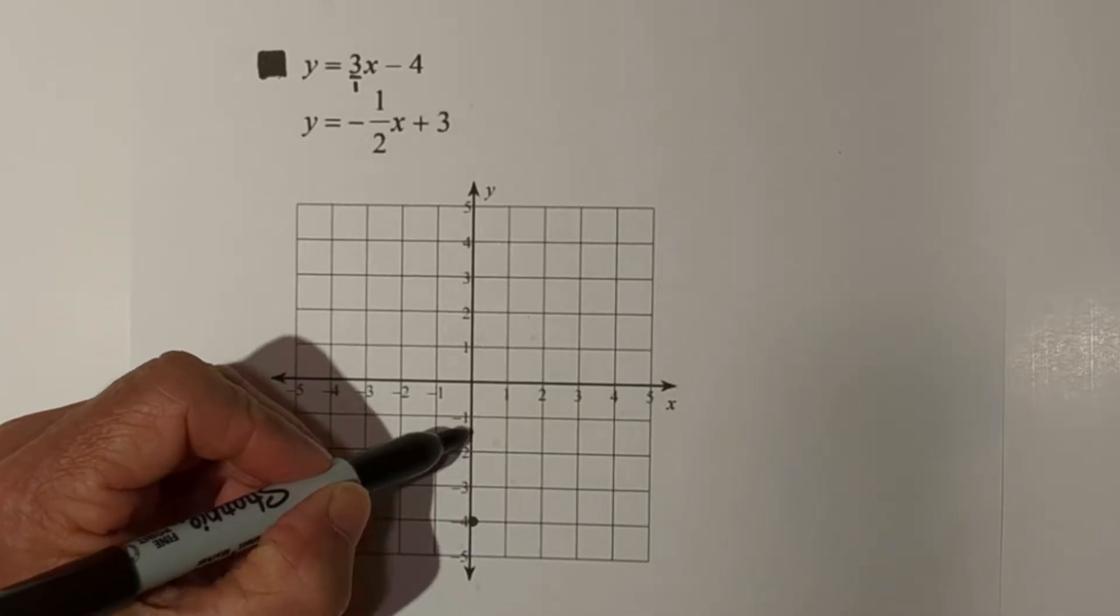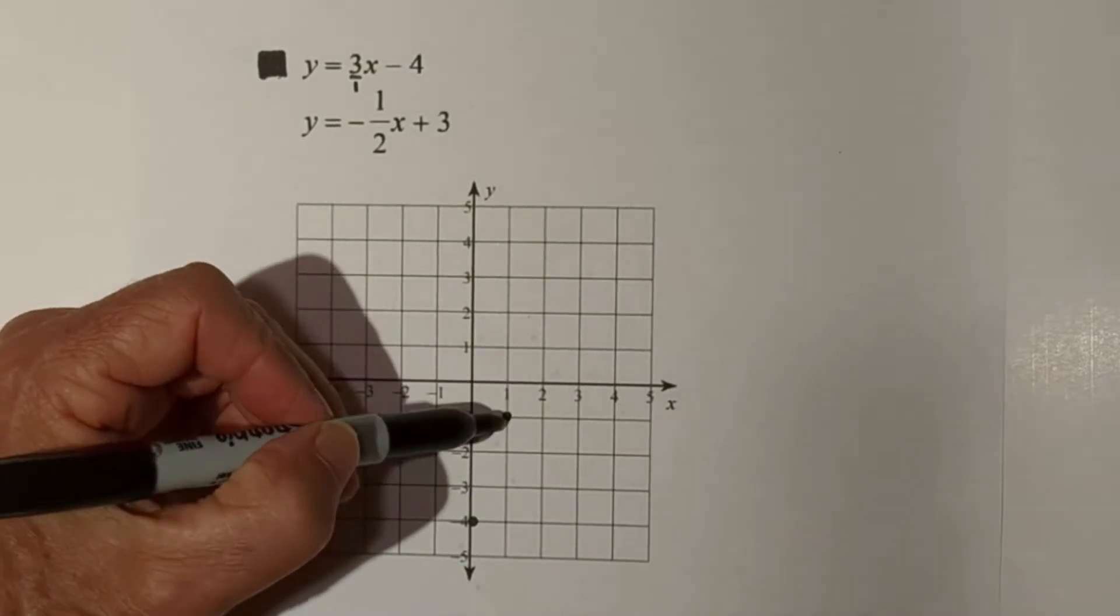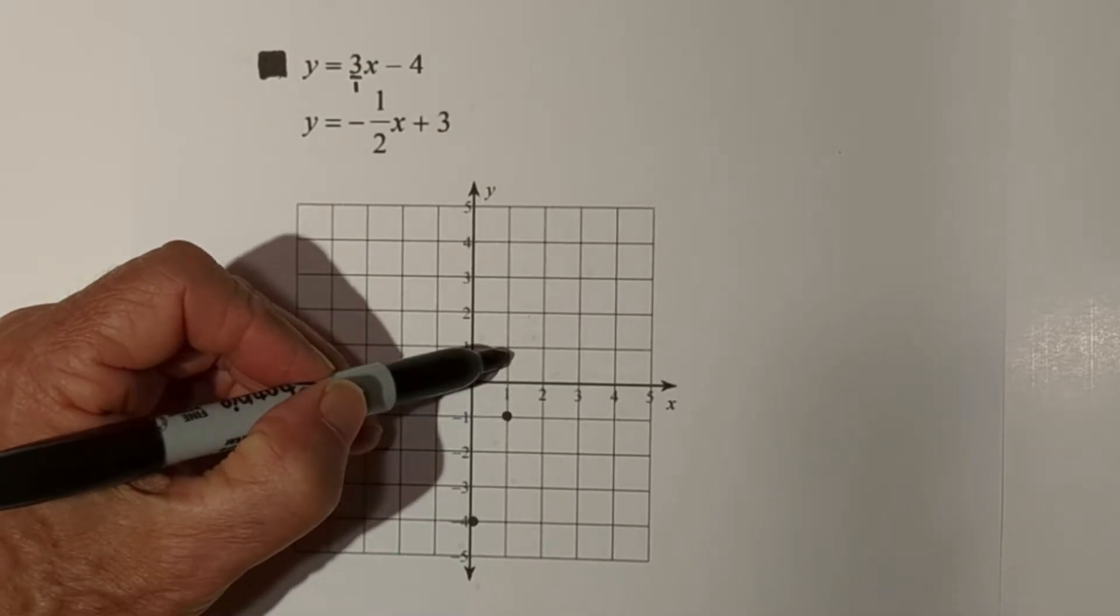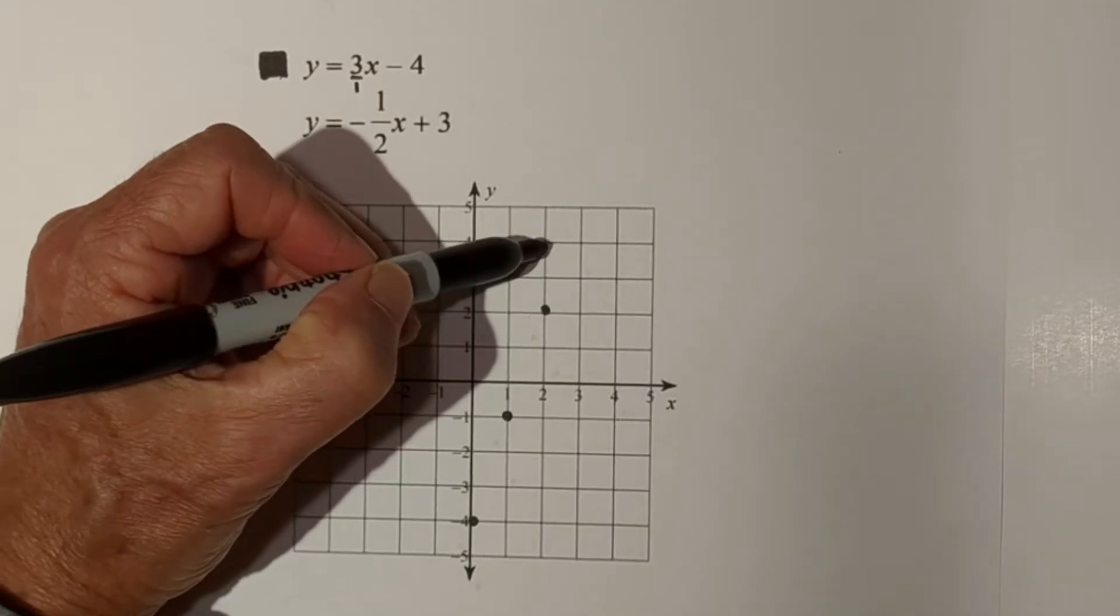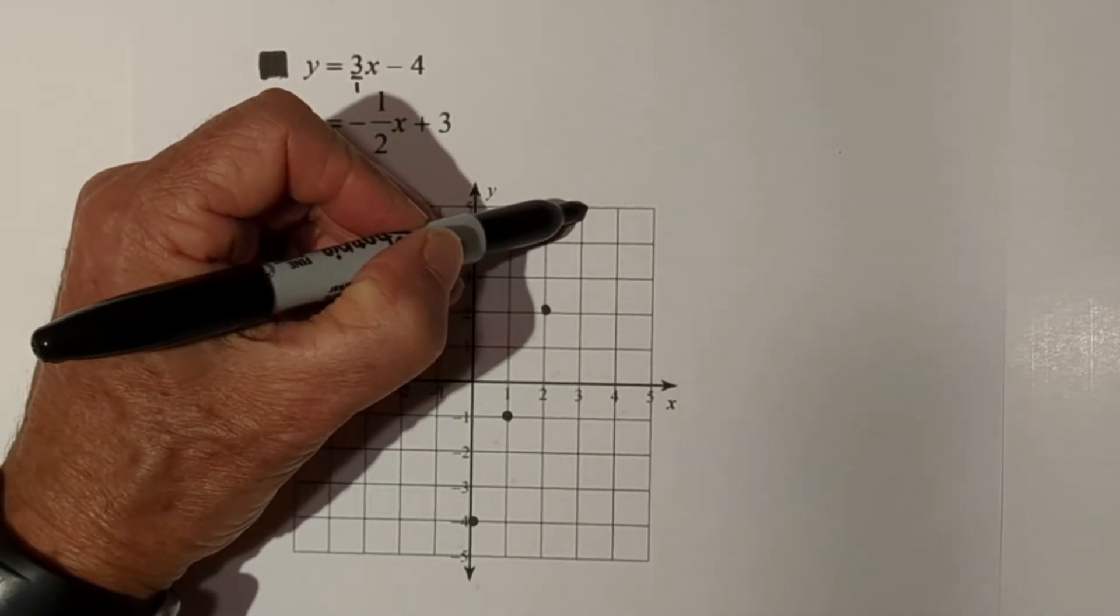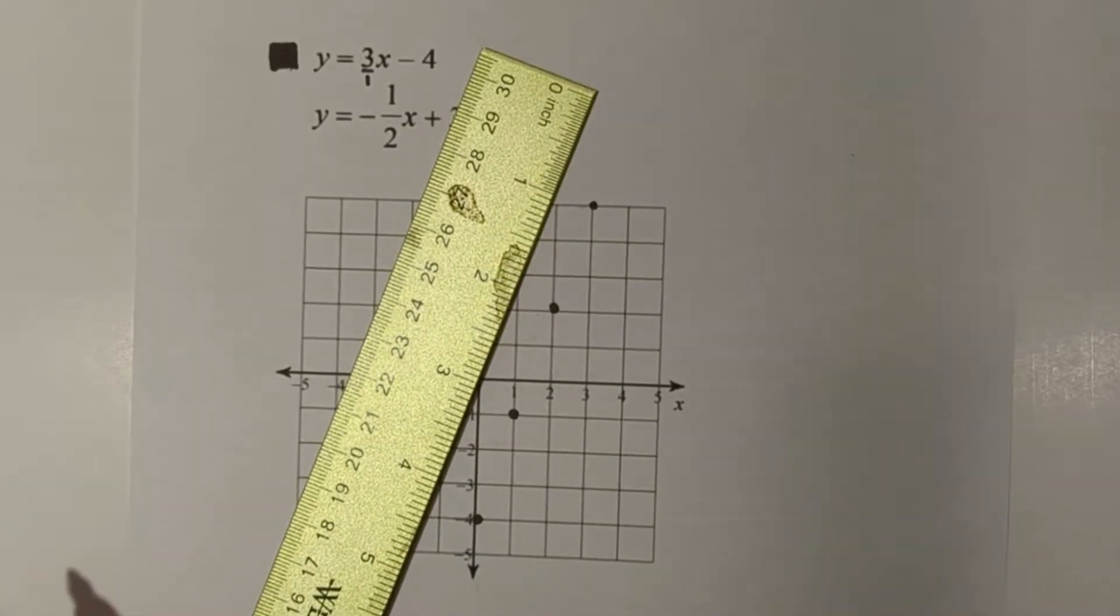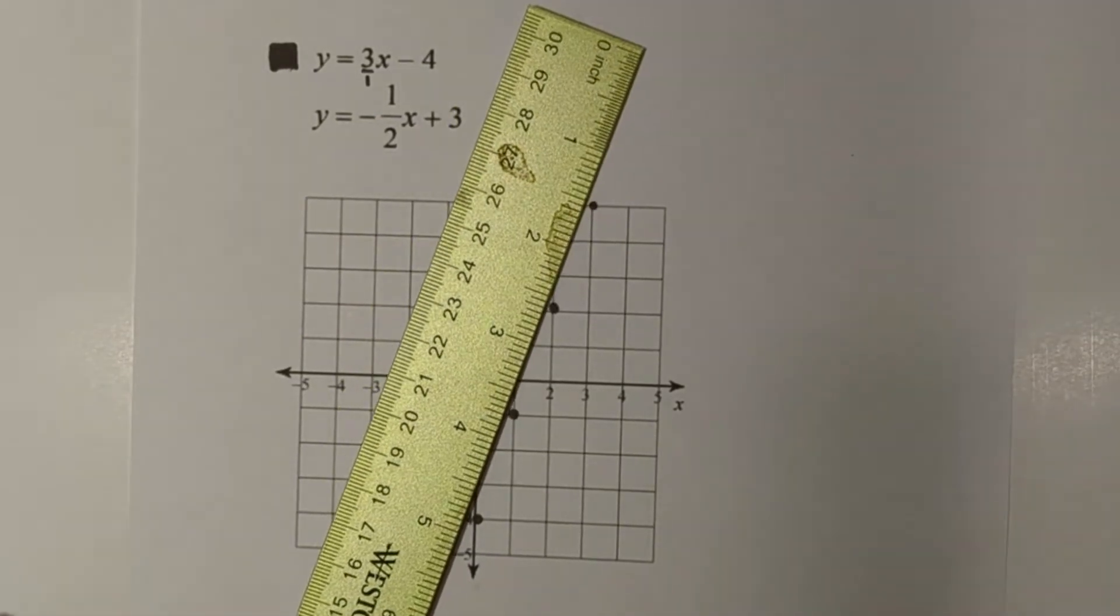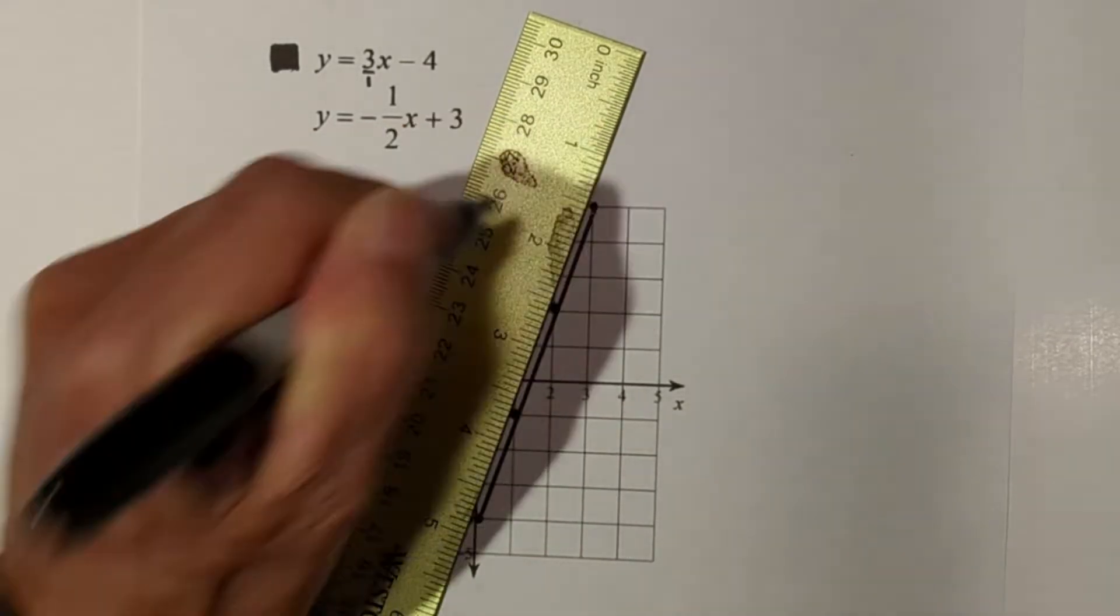So I have one, two, three, and there's my point right there. Then from this point I'm going to repeat: one, two, three, and over one. And then let's do one more for good measure: one, two, three, over one. Then I'm going to very carefully draw a line, and then we'll graph the other line. So here is our line.